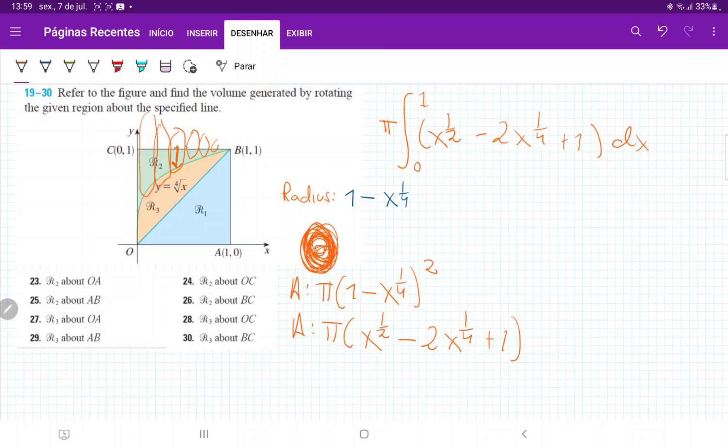Now we can integrate. That is pi times: x to the three-halves times two-thirds, minus x to the five-fourths times four-fifths times two, so that's minus 8 over 5, plus x. Let me double-check: five-fourths, four-fifths, yeah, that is correct.